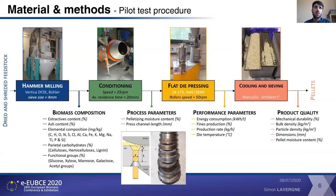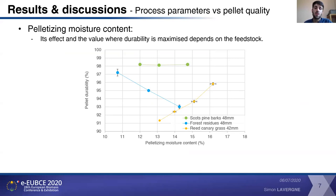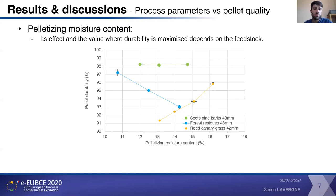Now let's speak about the results. When we changed the pelletizing moisture content, one first important result was to show that the effect of the pelletizing moisture content is not similar regarding the biomass that we pelletized. Here I selected three different feedstocks with three different behaviors. For example, when we pelletized Scots Pine bark from 12 to 15 percent moisture, the pellet durability did not change. When we pelletized forest residue from 11 to 14 percent moisture content, the pellet durability decreased. And when we pelletized red canary grass from 13 to 16 percent pelletizing moisture content, this durability increased.